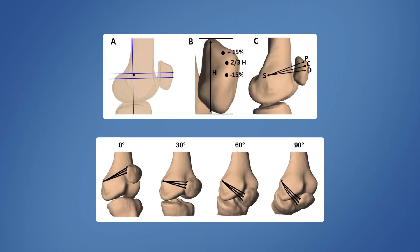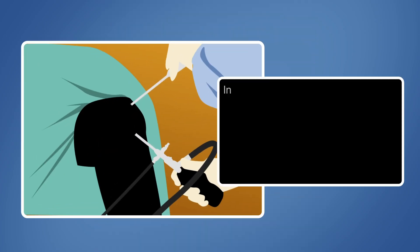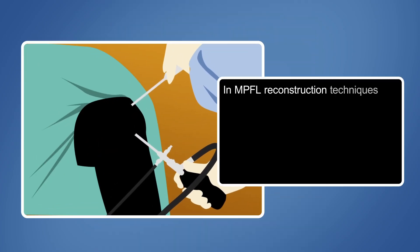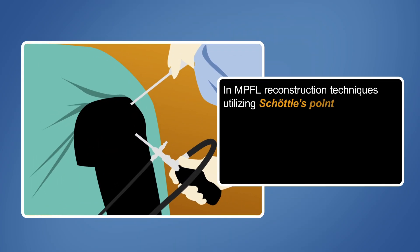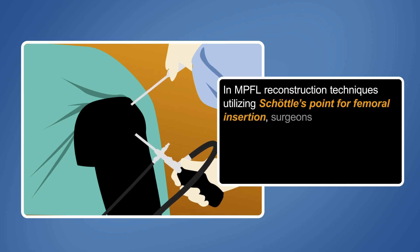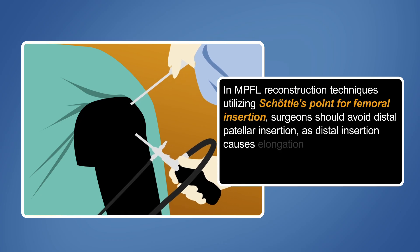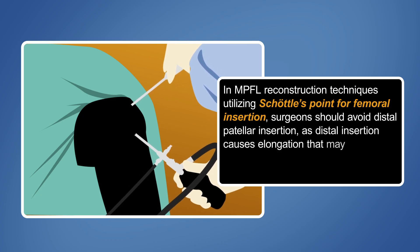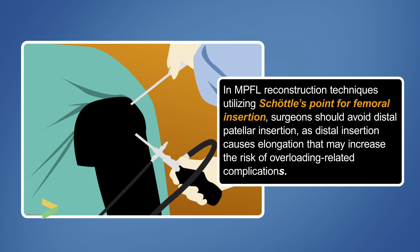Nevertheless, the results reveal that the median length of the proximal MPFL continuously decreases during flexion, indicating slackening. In contrast, the median length of the distal MPFL increases at deeper flexion angles, indicating tightening. These findings suggest that in MPFL reconstruction techniques utilizing Schottel's point for femoral insertion, surgeons should avoid distal patellar insertion, as distal insertion causes elongation that may increase the risk of overloading-related complications.